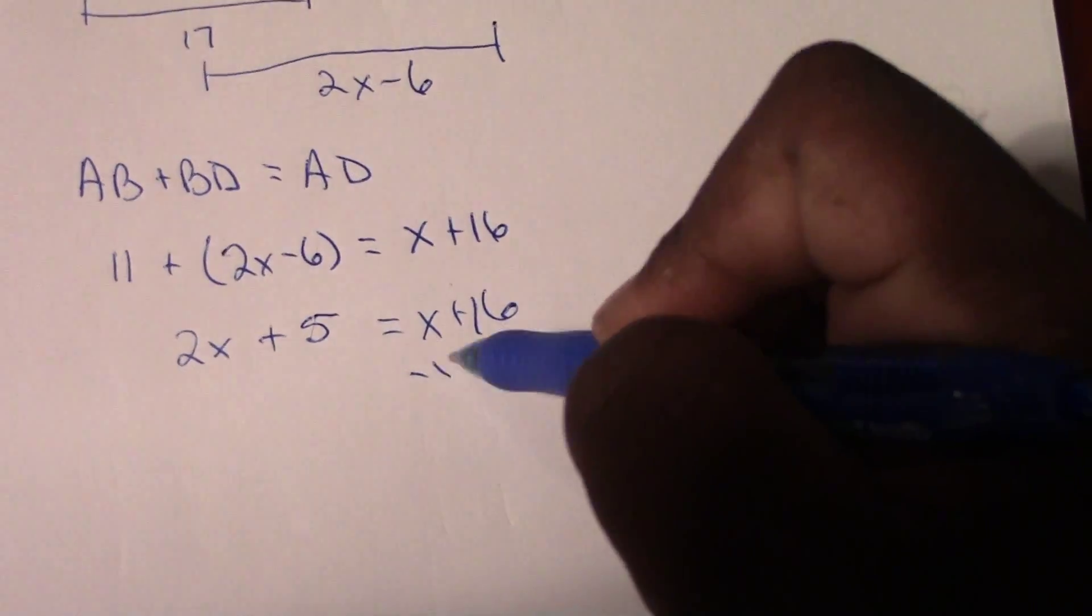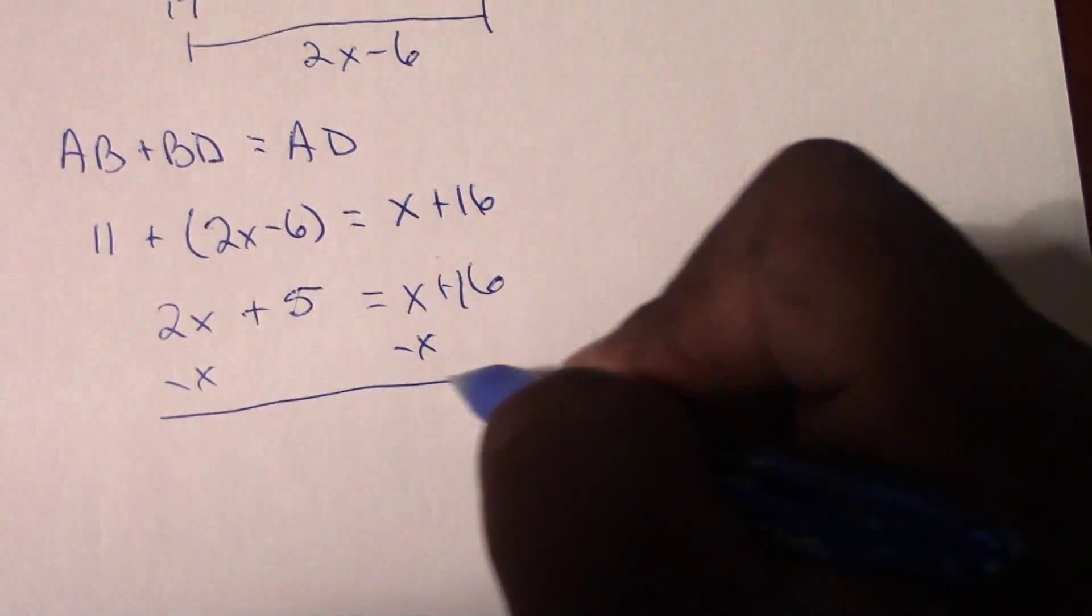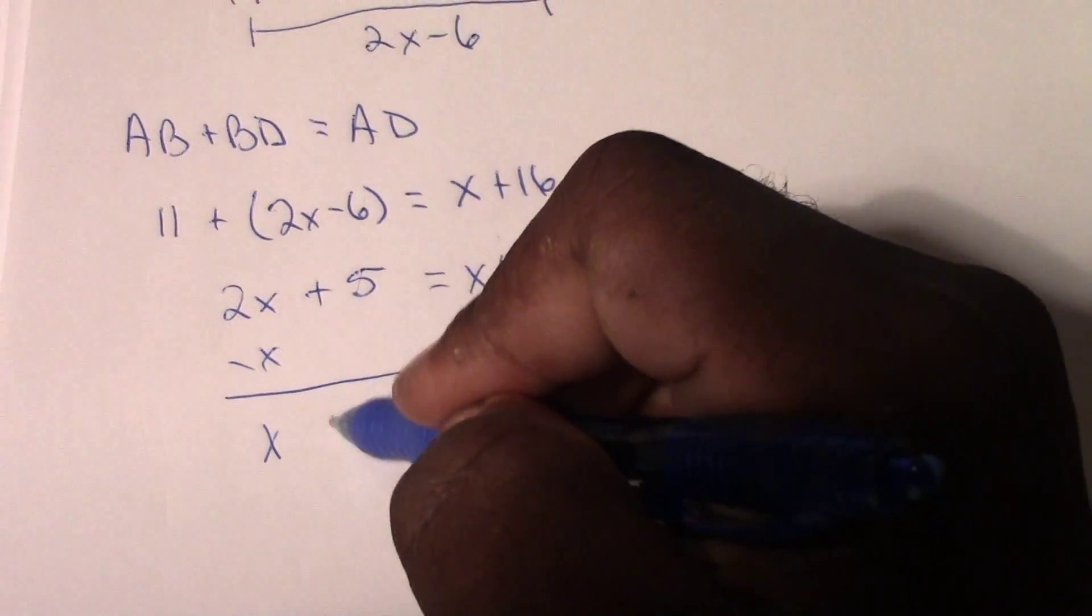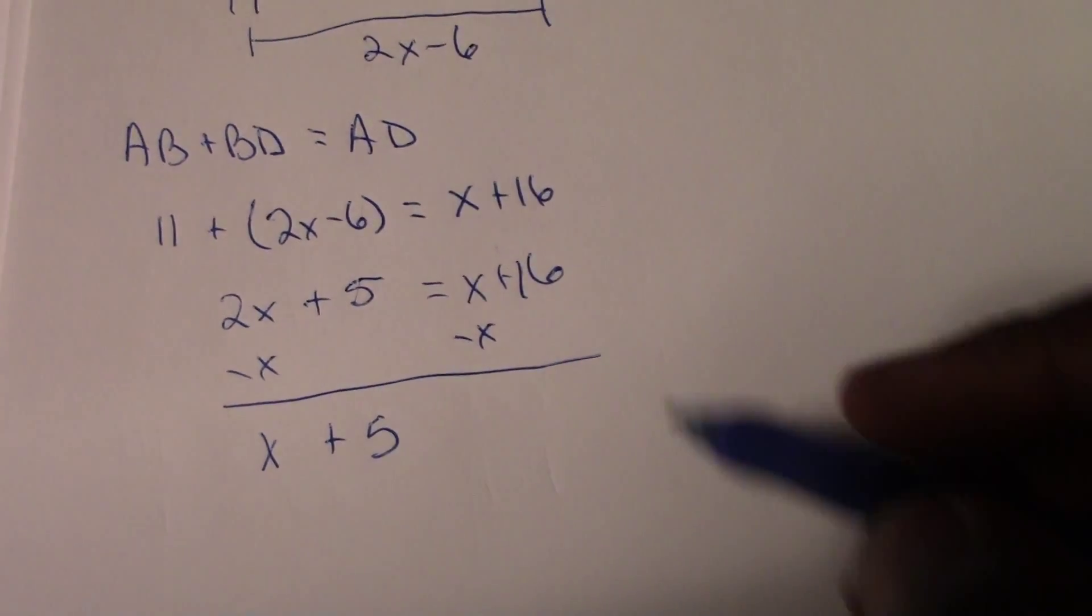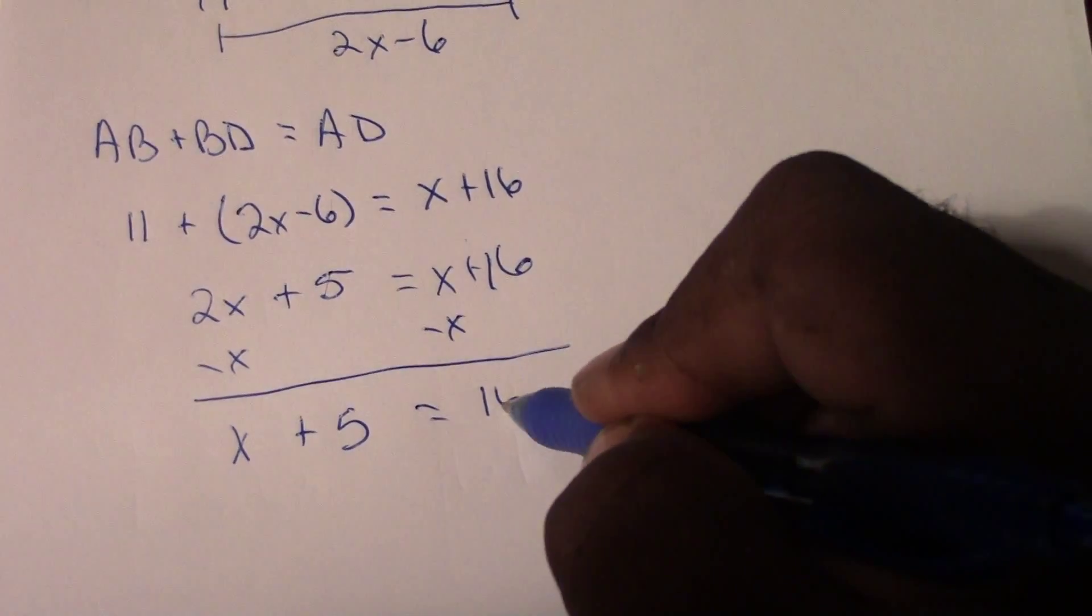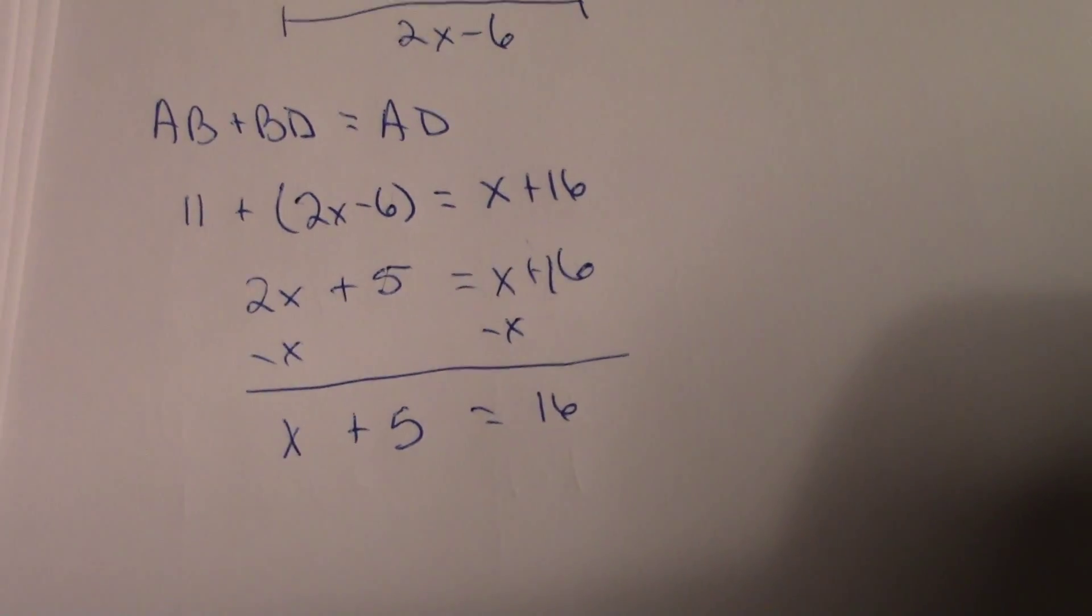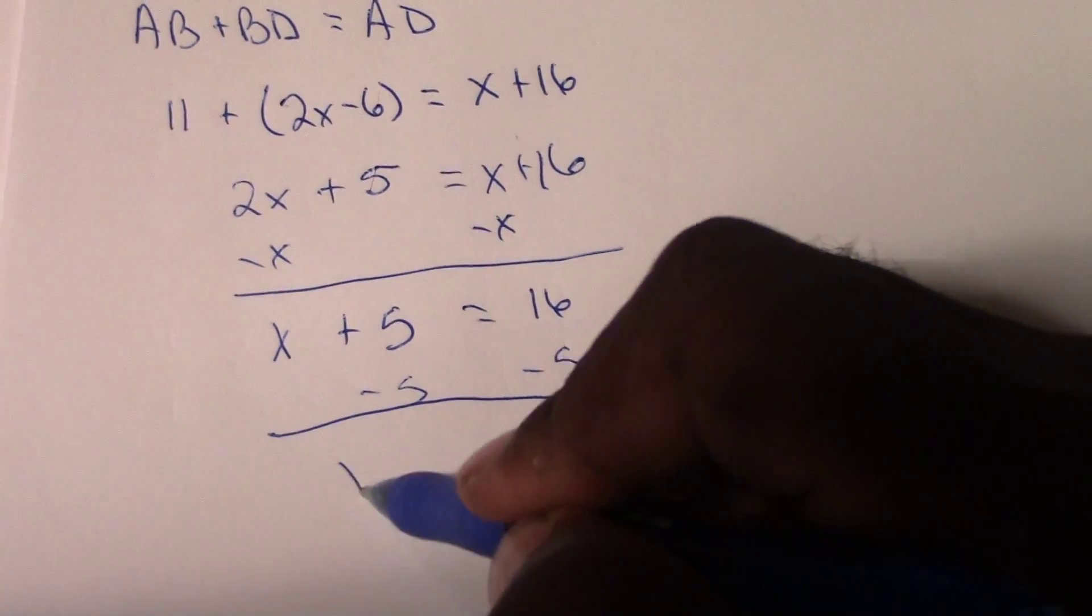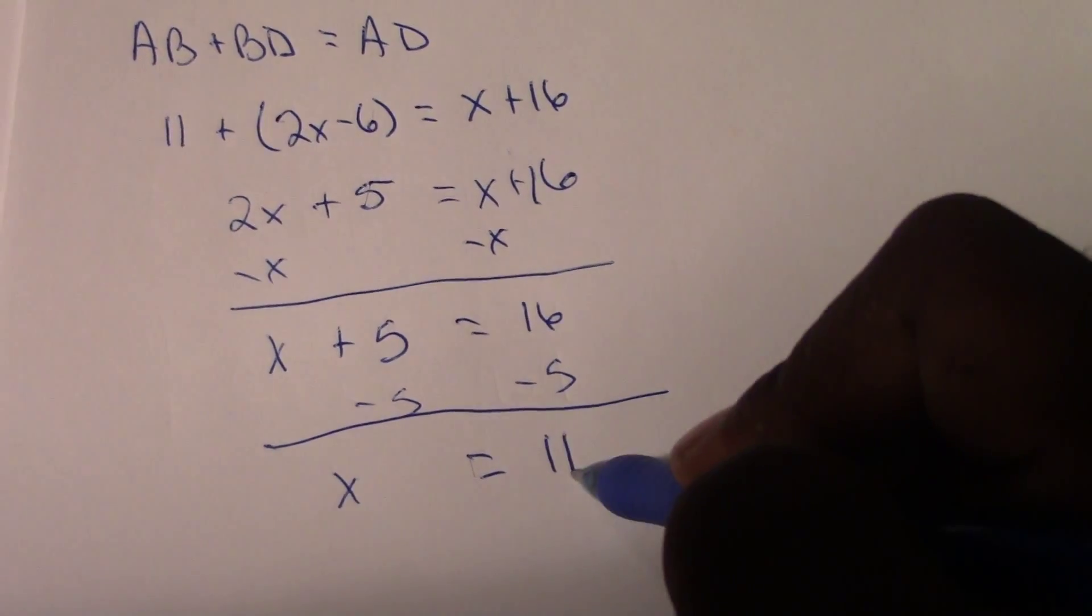The very first thing we're going to do is subtract X from both sides of the equation. 2X minus X leaves us with X, and we bring down our 5, so we have X plus 5 equals 16. From this point, we simply subtract 5 from both sides of our equation, and we find out that X equals 11.